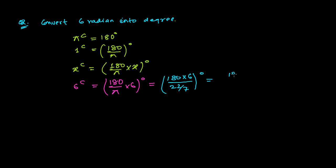Now 180 into 6 into 7 divided by 22 degrees. Here we can cancel something: this is 2 times 3 and this is 2 times 11, so we're getting 180 times 3 times 7, that is 21, divided by 11 degrees.